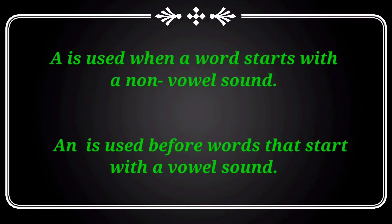We use 'a' when your word begins with a non-vowel sound — we can say a consonant. And then we use 'an' when your word begins with a vowel sound. What are the vowels? There are five vowels: a, e, i, o, u. If the word begins with the a, e, i, o, u sound, you have to use 'an'.